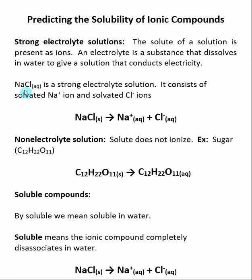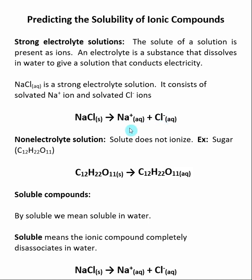A classic example is NaCl, which is common table salt. NaCl dissolves in water to give a strong electrolyte solution. When it does that, it dissociates into solvated Na⁺ ions and solvated Cl⁻ ions. That's represented here — we're taking solid sodium chloride and dissolving it. Once dissolved, the ions are solvated, which is why we use the subscript AQ. That's the state of Na⁺ and Cl⁻: they are dissolved in water.